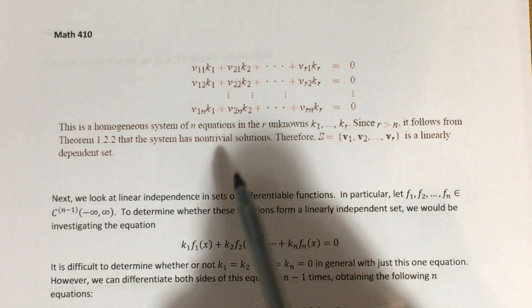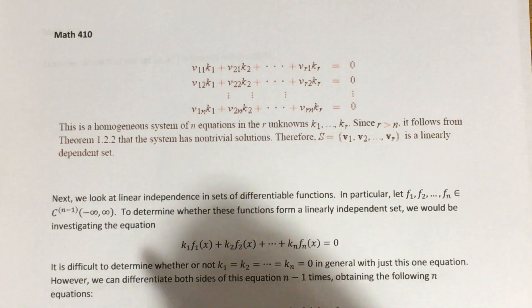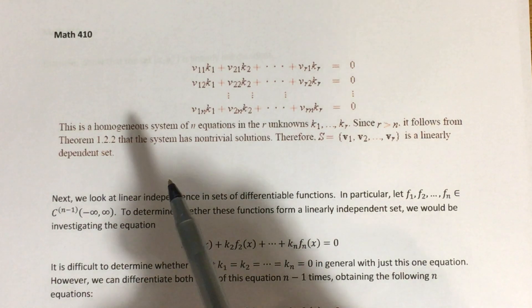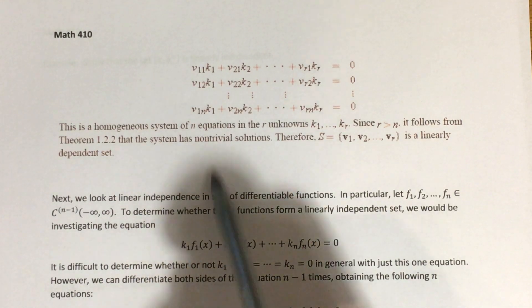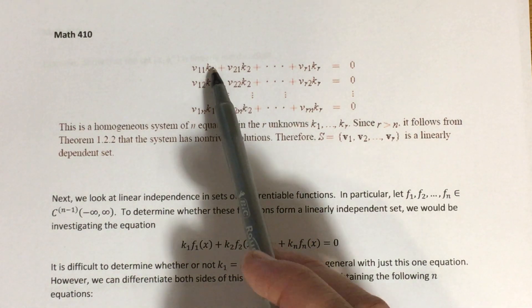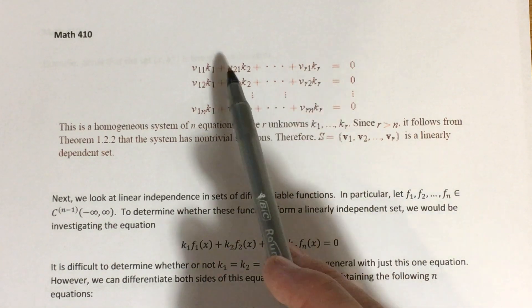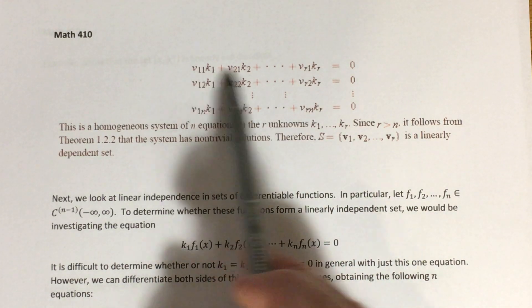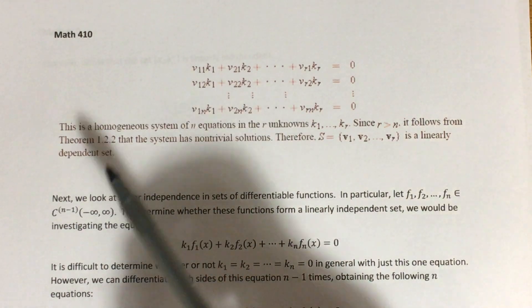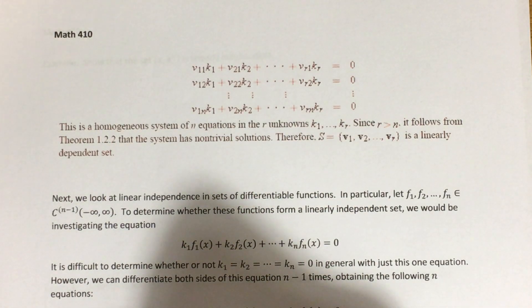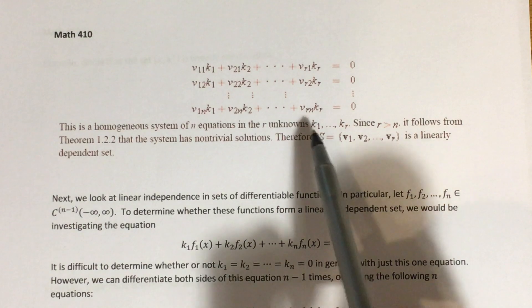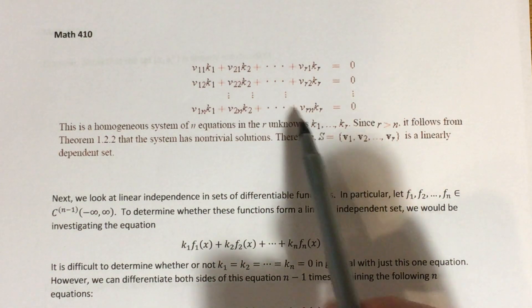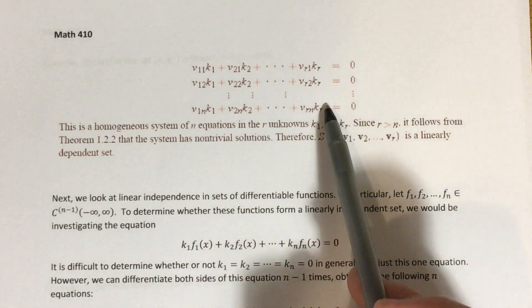As complicated as this system looks, we have a theorem to handle it. We have R unknowns (the k's, k1 through kR) but only N equations, because each equation corresponds to one of the components in a vector from RN. Since we assumed R is greater than N, we have more unknowns than equations.